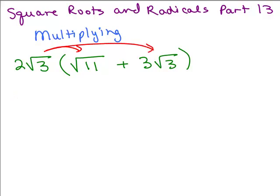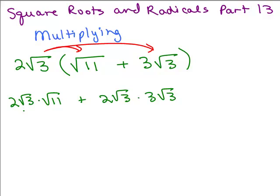So we're going to do 2 square roots of 3 times square root of 11, plus 2 square roots of 3 times 3 square roots of 3. What you have to be careful about is what you multiply on the outside of the radical is very different than what gets multiplied on the inside. So on the outside for this first one it's just a 2, and I've got to do 3 times 11 on the inside, which is square root of 33.